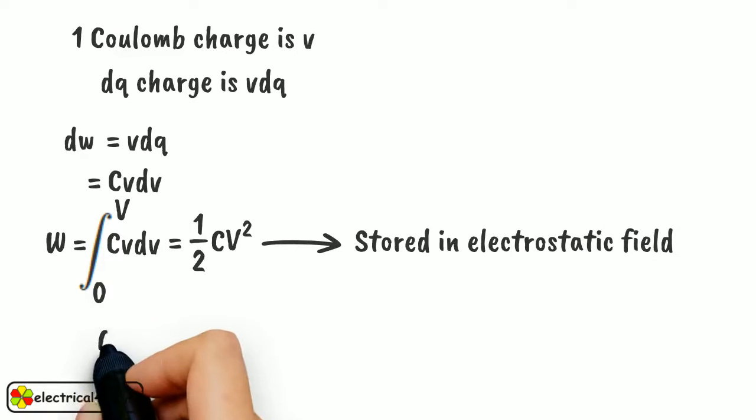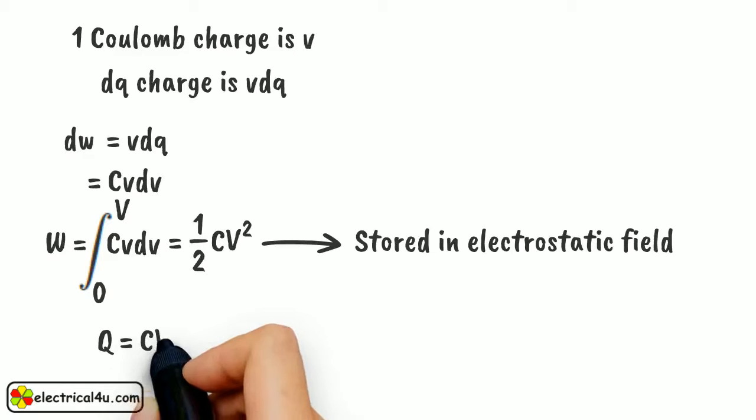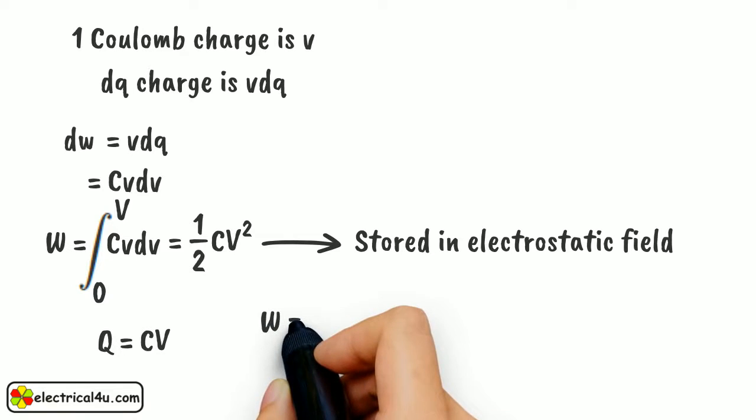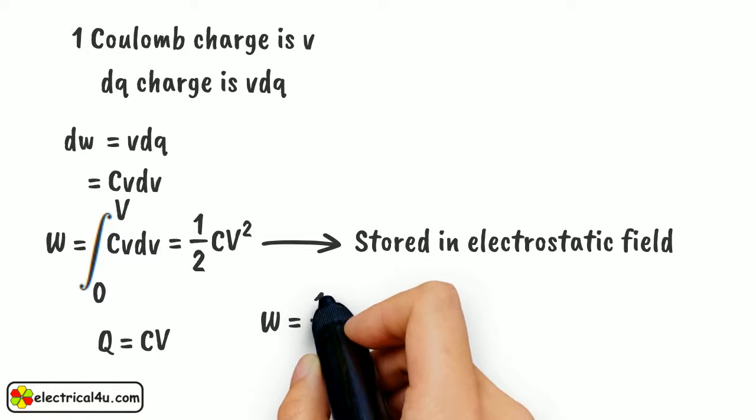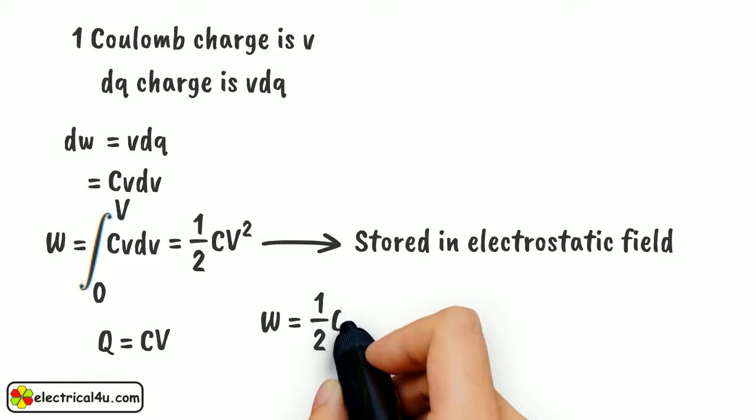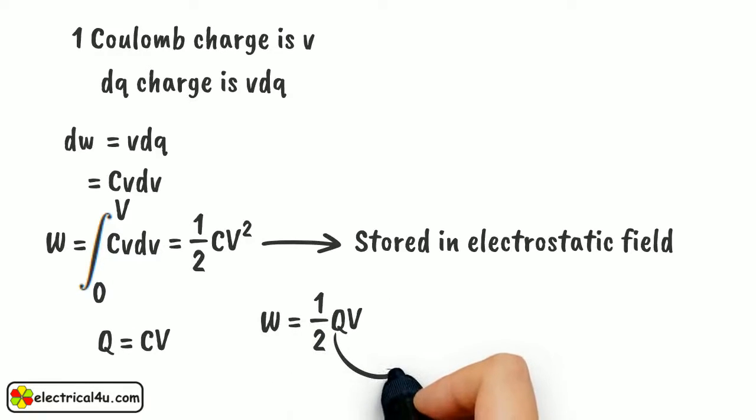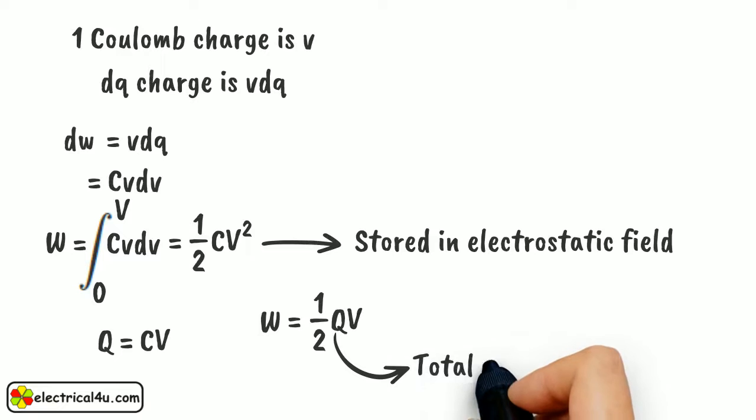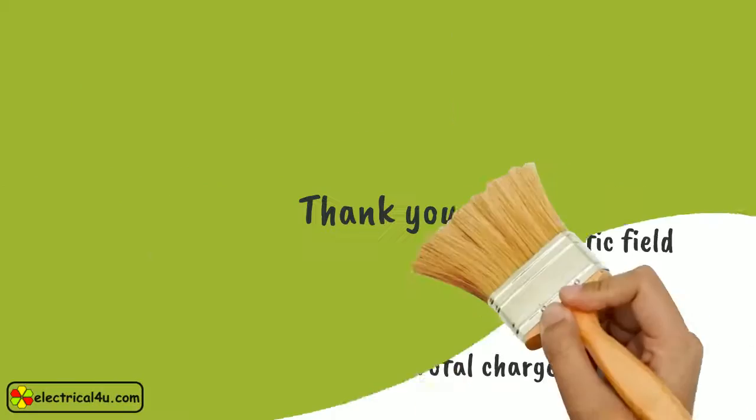Again, C into V is total charge accumulated in capacitor during charging. So this equation can be rewritten as 1 by 2 QV, where Q is the total charge accumulated in the capacitor during charging. Hope you got the idea. Thank you.